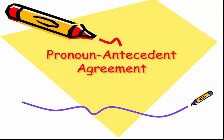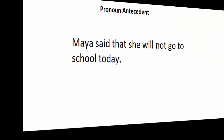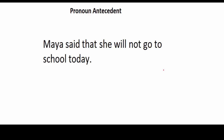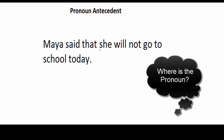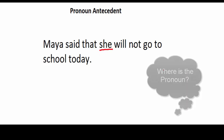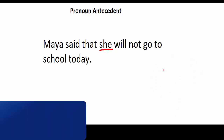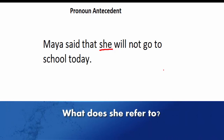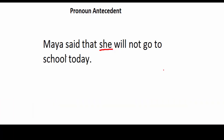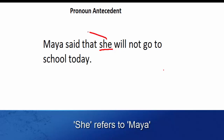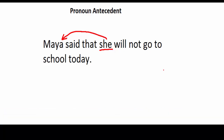Let's begin by revising the concept with a sentence. Here's the sentence: 'Maya said that she will not go to school today.' The question is: where is the pronoun? The pronoun here is 'she.' And what does 'she' refer to? She means Maya — so 'she' refers to Maya, which is a noun that comes before the pronoun.